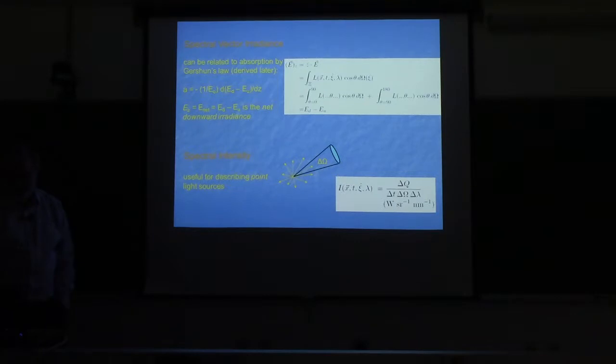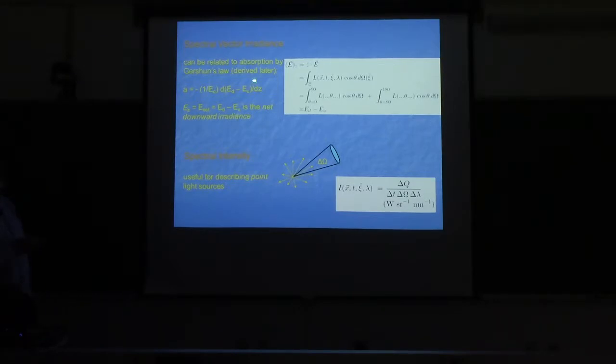There are a couple of other things you'll see in the literature. One is called the vector irradiance, where you take the radiance times the cosine without the absolute value signs.